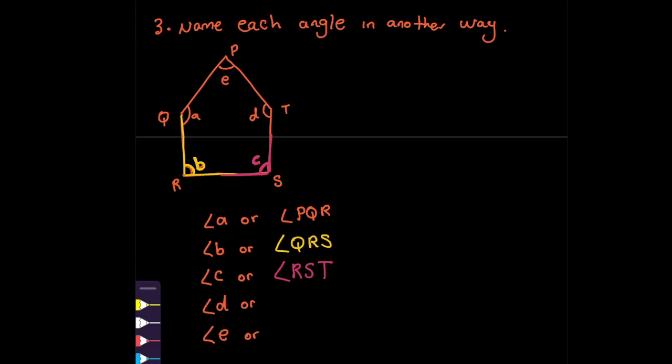What about angle D? So the midpoint is T. We say STP. Angle E is here. We can call QPT, or if I want to give another name, I can say TPQ. So these are the names that we can call the angles.